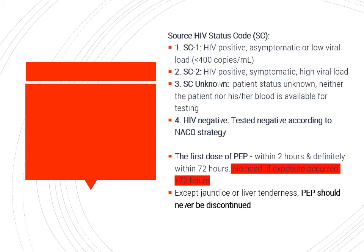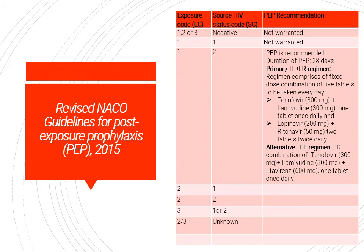PEP has some side effects, but it should only be discontinued if there is liver involvement or jaundice; otherwise the full course must be completed. As per the NACO guideline for post-exposure prophylaxis: if the source is negative, no PEP is needed regardless of exposure category. For mild exposure with an asymptomatic positive source with low viral copies, PEP is also not needed. However, for moderate or severe exposure with a symptomatic or asymptomatic positive source, treatment is required.